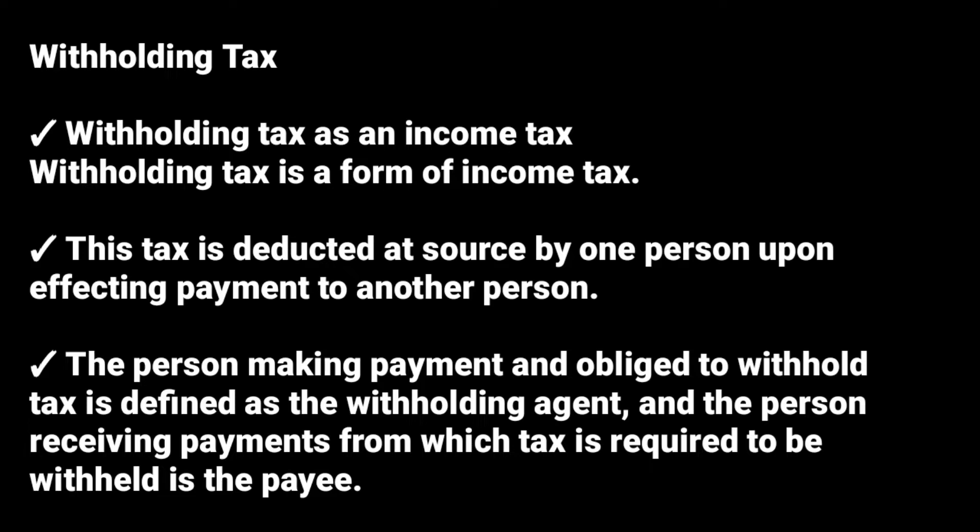It is deducted at the source by one person upon effecting payment to another person. So when you are paying — like if you have an employee — before paying the employee, you have to first deduct all the taxes. And that is what we call withholding tax. You are holding the taxes, taxing the person at the source. You give them the net income and then you withhold the taxes, and then you are the one who is supposed to pay those taxes.